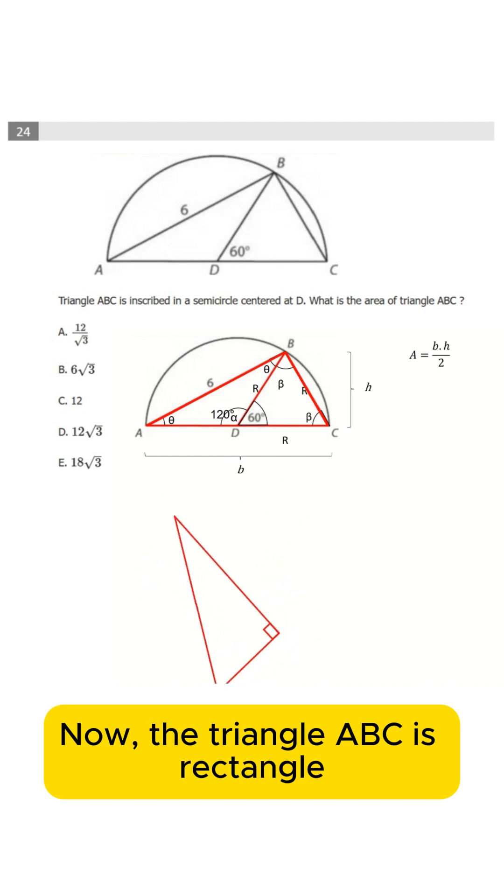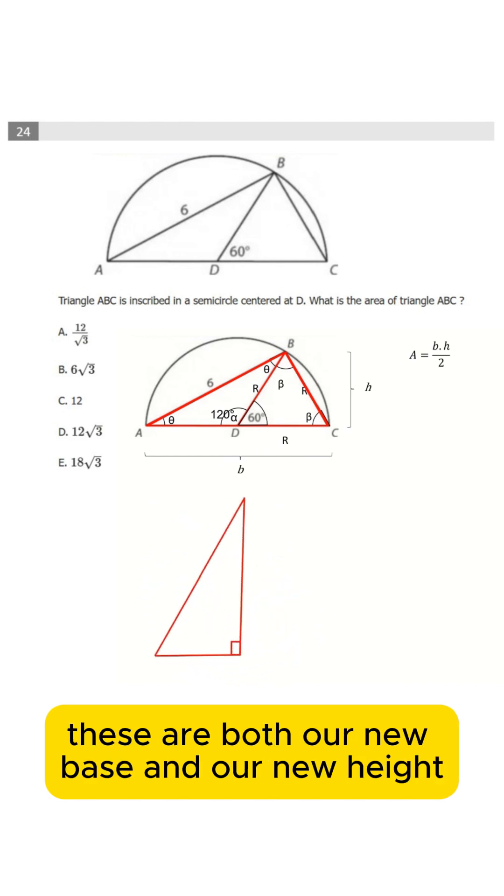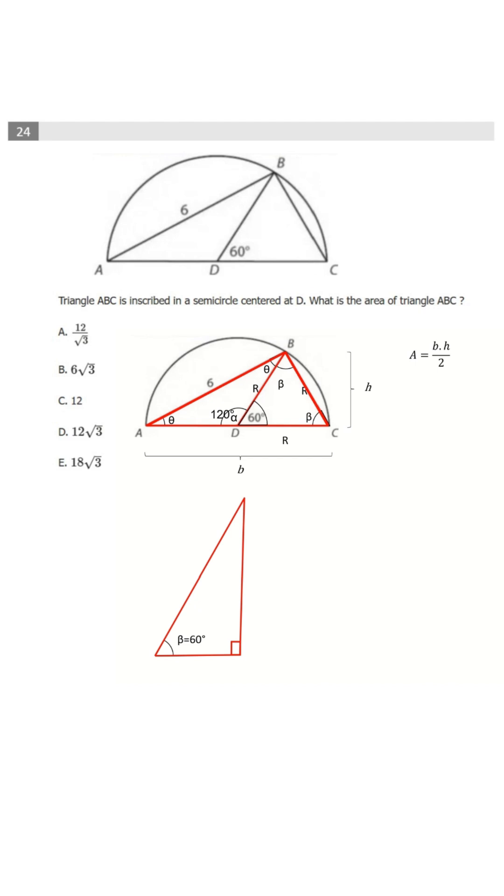Now, the triangle ABC is a right triangle. These are both our new base and our new height. We know the height but we need to find the base.